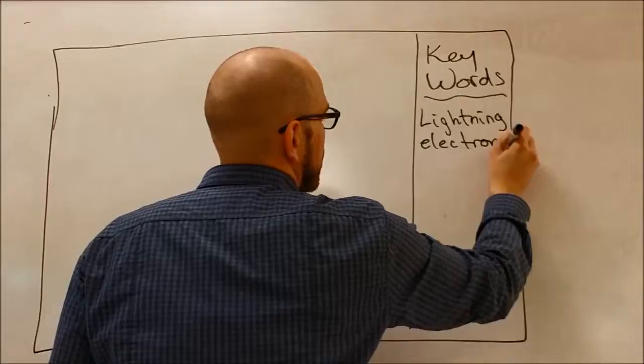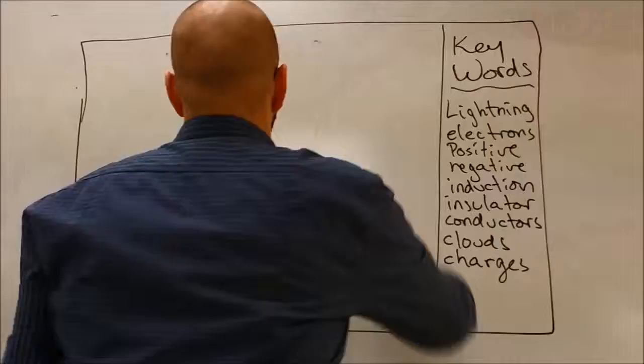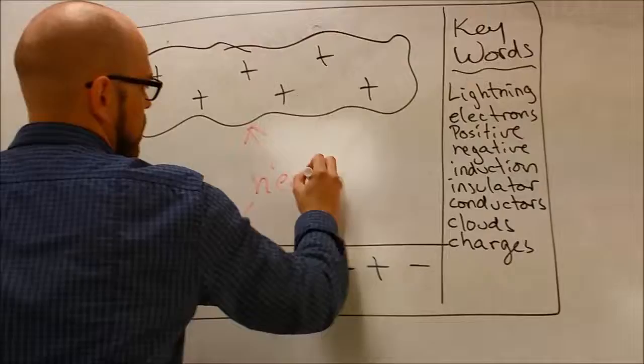In this video we're going to talk about how lightning works. Keywords we need to know: lightning, electrons, positive, negative, induction, insulator, conductors, clouds, charges. Lightning, how does it work? Well, you have a cloud and you have all the protons and electrons equally distributed.